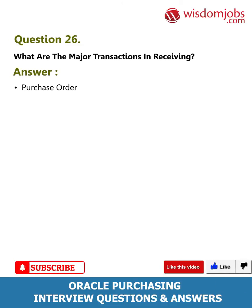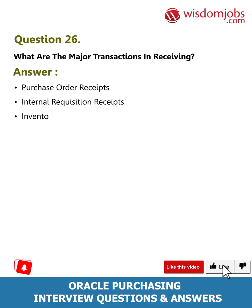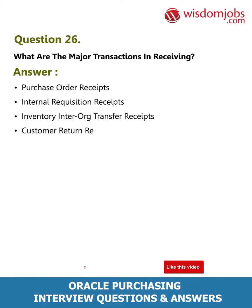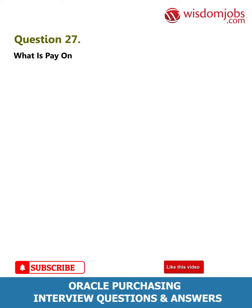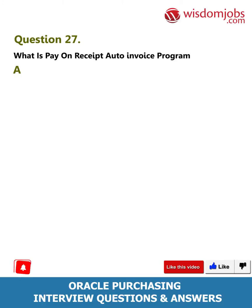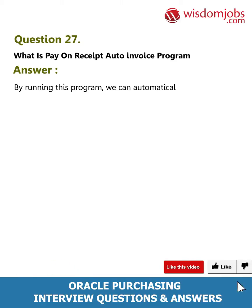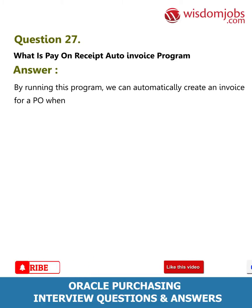Question 26: What are the major transactions in receiving? Answer: Purchase order receipts, internal requisition receipts, inventory inter-org transfer receipts, and customer return receipts. Question 27: What is the Pay on Receipt Auto Invoice program? Answer: By running this program we can automatically create an invoice for a PO when we enter a receipt for the respective PO.